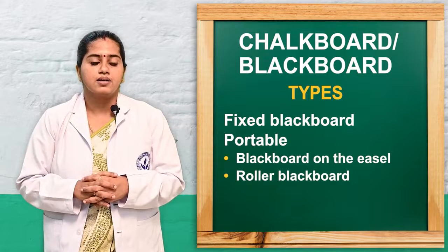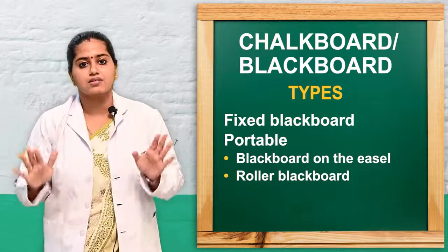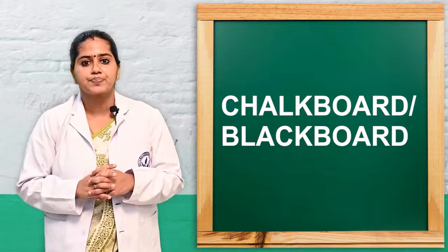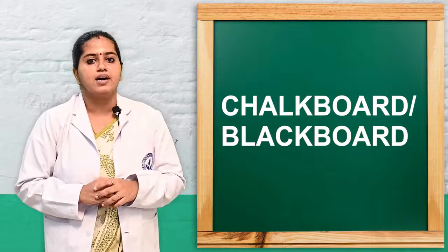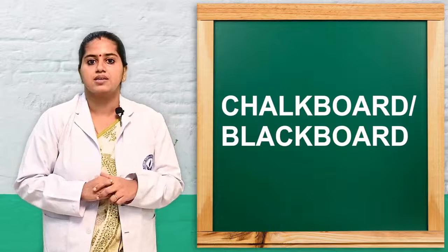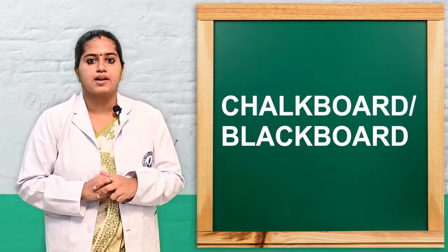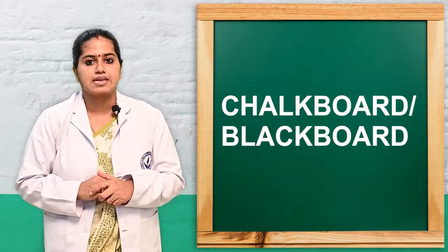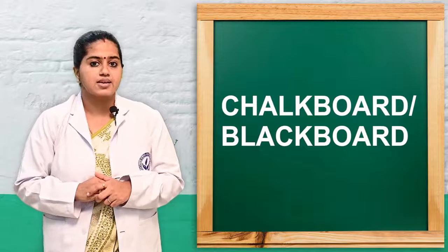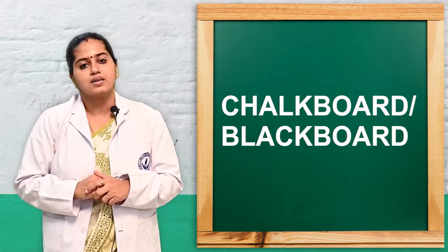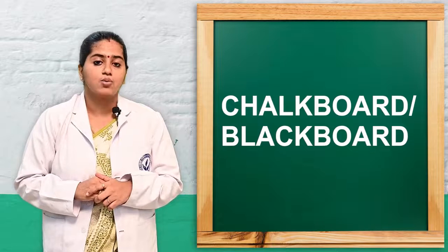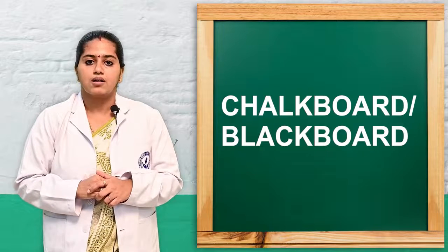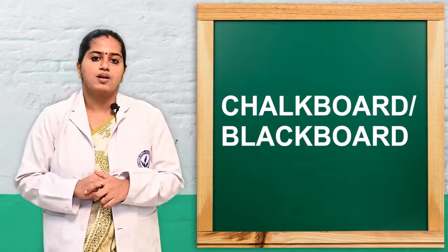Next we will see what are the surfaces of the chalkboard. The surfaces include: paint coated pressed cement surface, dull coated plastic surfaces, vitreous coated steel surfaces, and ground glass based surfaces are also there in the chalkboard.